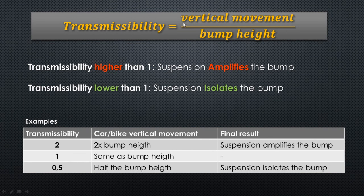To sum up, transmissibility is the ratio between the vertical movement of the car or bike — the suspended mass — divided by the bump height. A transmissibility higher than 1 means the suspension amplifies the bump, and a transmissibility lower than 1 means the suspension isolates the bump, as we saw in the previous simulation.